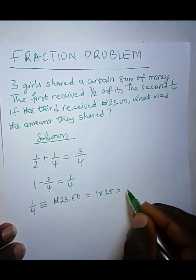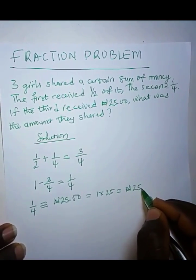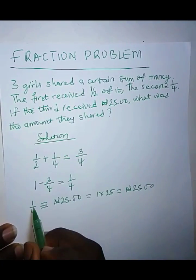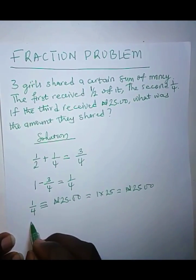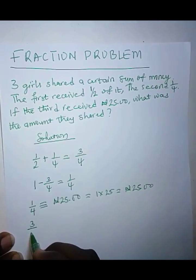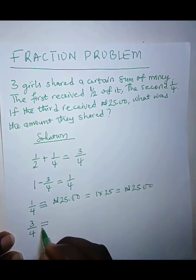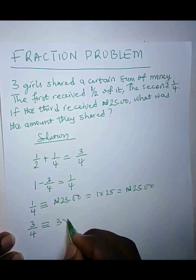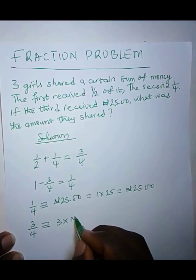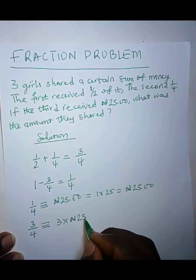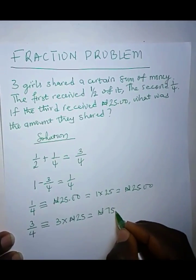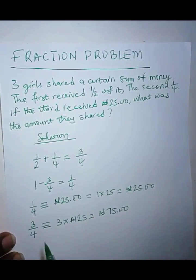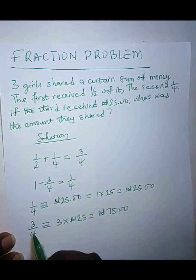Now, if one part is 25 Naira, then 3 parts, which is 3 over 4, should be equivalent to 3 times 25 Naira. 3 times 25 Naira, which is 75 Naira.